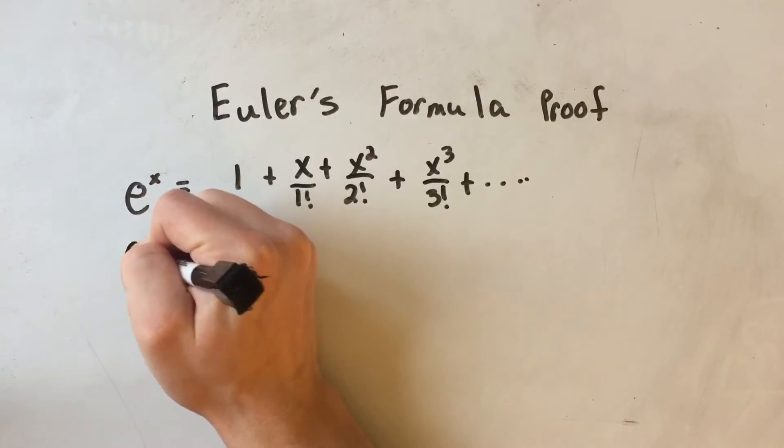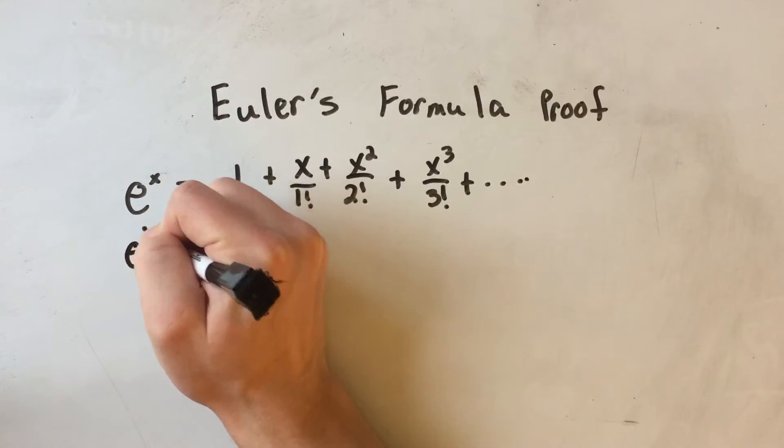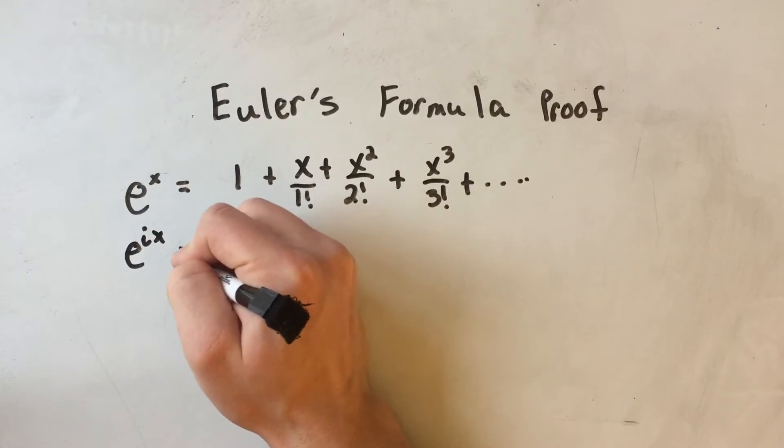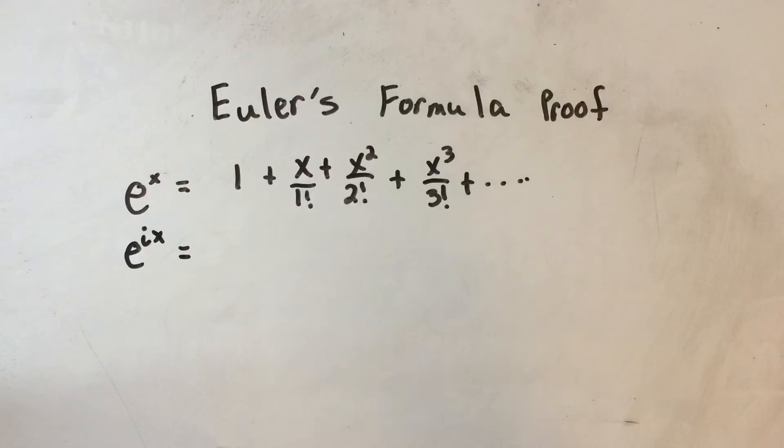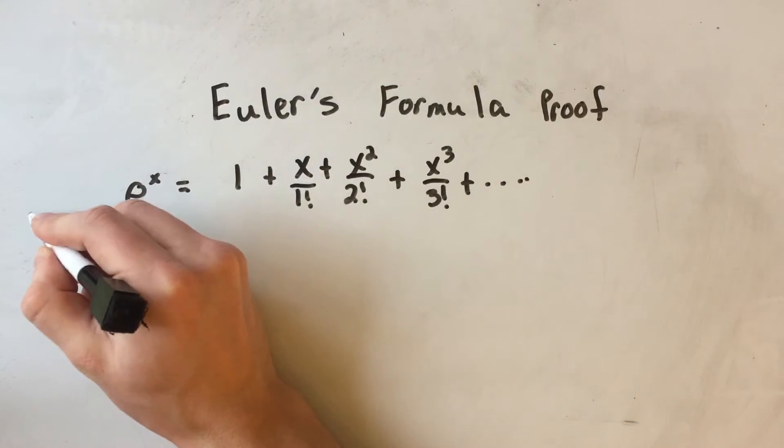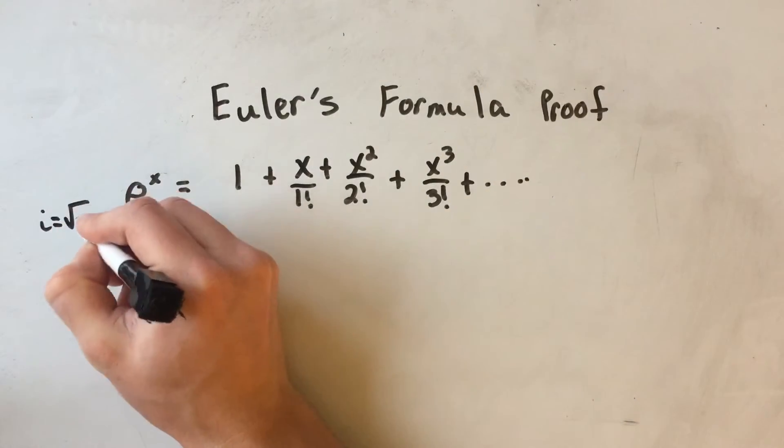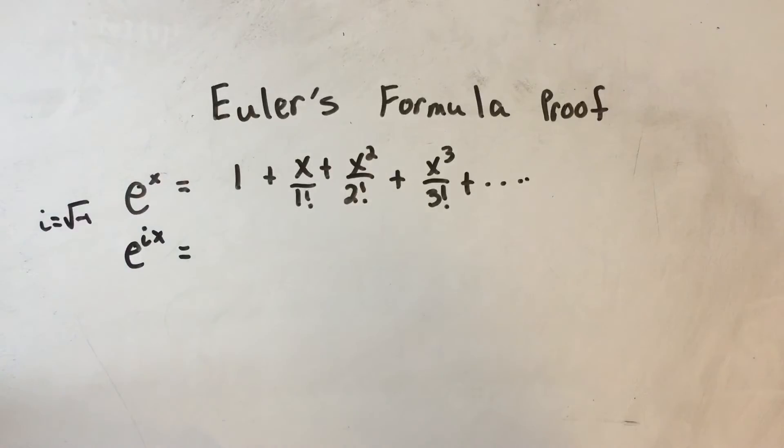Let's see what happens. Instead of e to the x, I'm gonna substitute e to the ix. I'm gonna substitute i, and remember that's where i is equal to the square root of negative 1, that imaginary number.